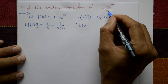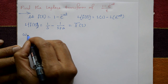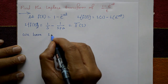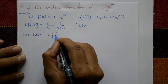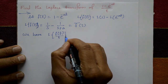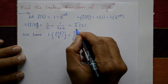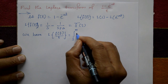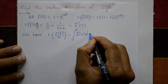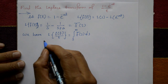Now including the division by t, we use the property: Laplace of f(t) divided by t equals the integration from s to infinity of f bar of s with respect to s.